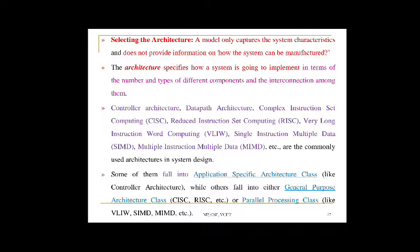CISC architecture uses an instruction set representing complex operations. It is possible for a CISC instruction to perform a large complex operation with a single instruction; complexity lies in the software. The use of a single complex instruction in place of multiple simple instructions reduces program memory access and size. However, it requires additional silicon for implementing the microcode decoder. The data path and decoding structure for CISC processors are complex.